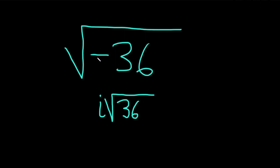Again, step one, that negative just always turns into an i. And then the square root of 36 is 6. So this is really equal to i times 6.